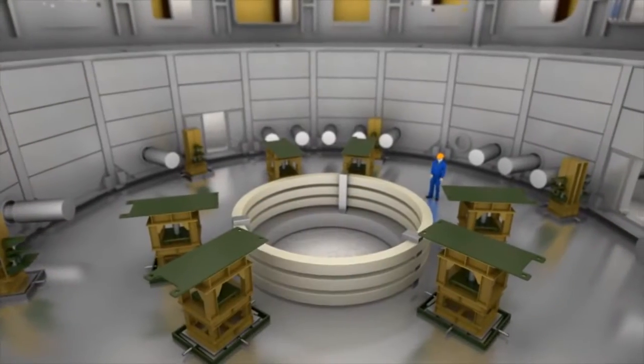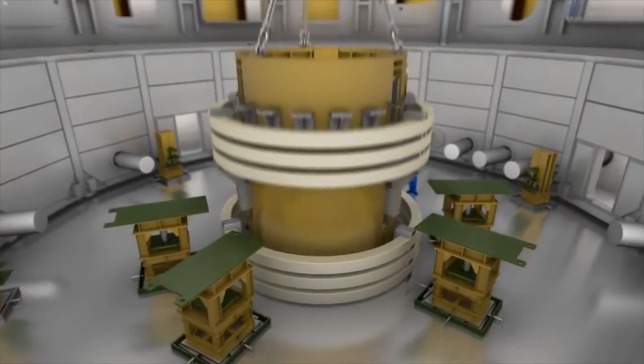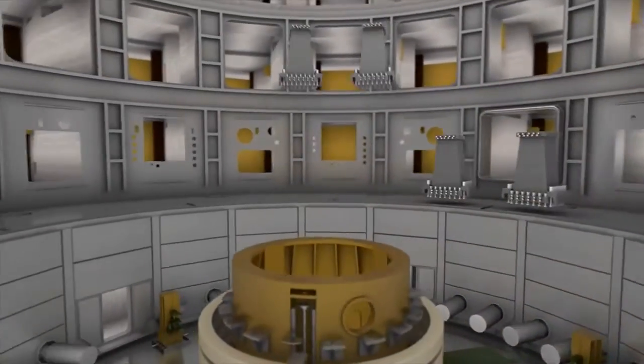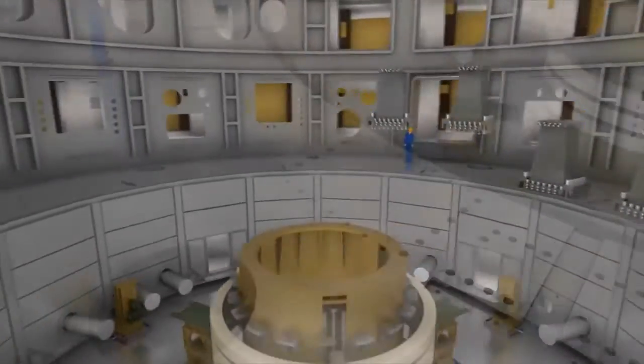A set of spare pre-compression rings are the next in line, together with the central support structure and the 18 gravity supports for ITER's huge toroidal field coils.